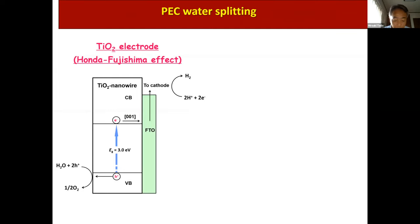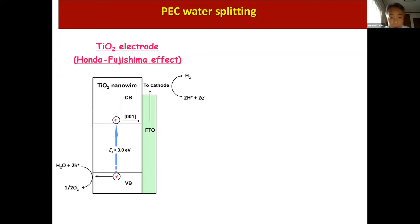Photo-electrochemical water splitting by TiO2 electrode is well known as the Honda-Fujishima effect. Light irradiation of TiO2 excites electrons in the valence band to the conduction band. The valence band holes oxidize water to produce oxygen, while the conduction band electrons are transported to the cathode through the external circuit to reduce water to hydrogen.